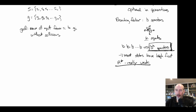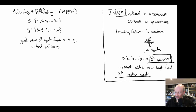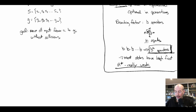A* is really weak here — it's not going to be able to solve many problems. The reason is the combination of the exponential number of operators at each state and the fact that many of them have high f cost. So we should want something better.